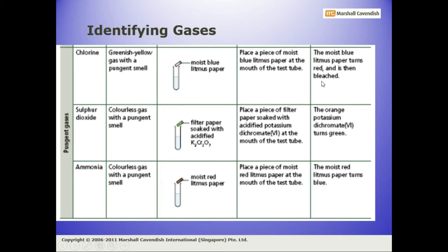In case of sulfur dioxide, we perform the test: place a piece of filter paper soaked with acidified potassium dichromate. Potassium dichromate is a transition metal salt, obviously a colored substance, and it is also an oxidizing agent.